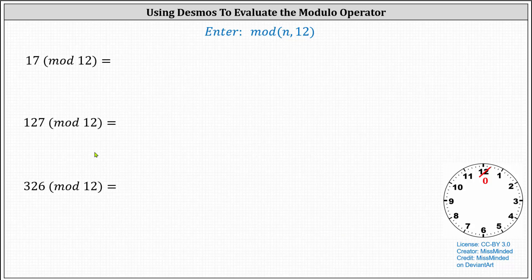This lesson will show how to evaluate mod 12 using the Desmos graphing calculator. First, we have 17 mod 12, which is equal to the remainder when 17 is divided by 12, which we should recognize is equal to five.